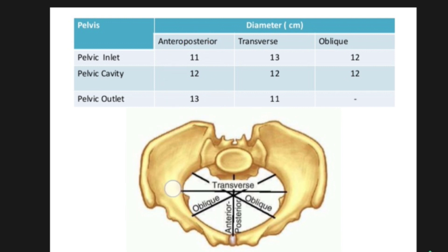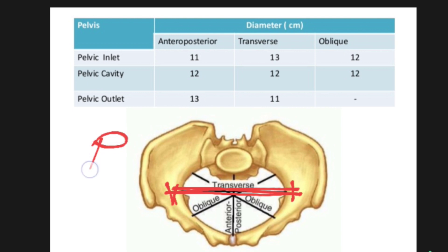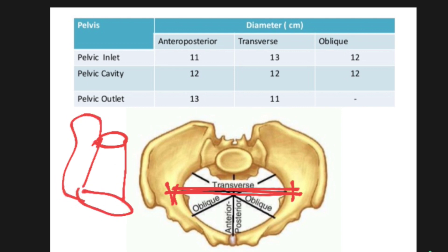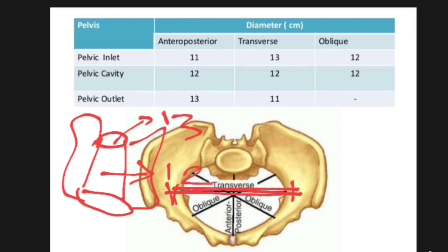Next is the transverse diameter. The transverse diameter attaches two landmarks and they are known as the iliac pectineal line. The transverse diameter also has inlet, cavity, and outlet measurements. The inlet is 13 centimeters, the cavity is 12 centimeters, and the outlet is 11 centimeters.